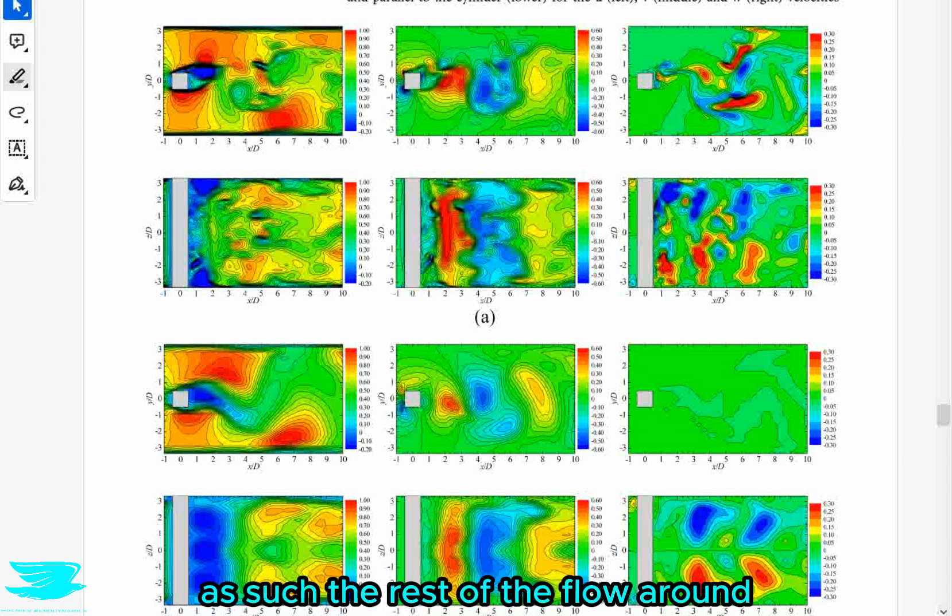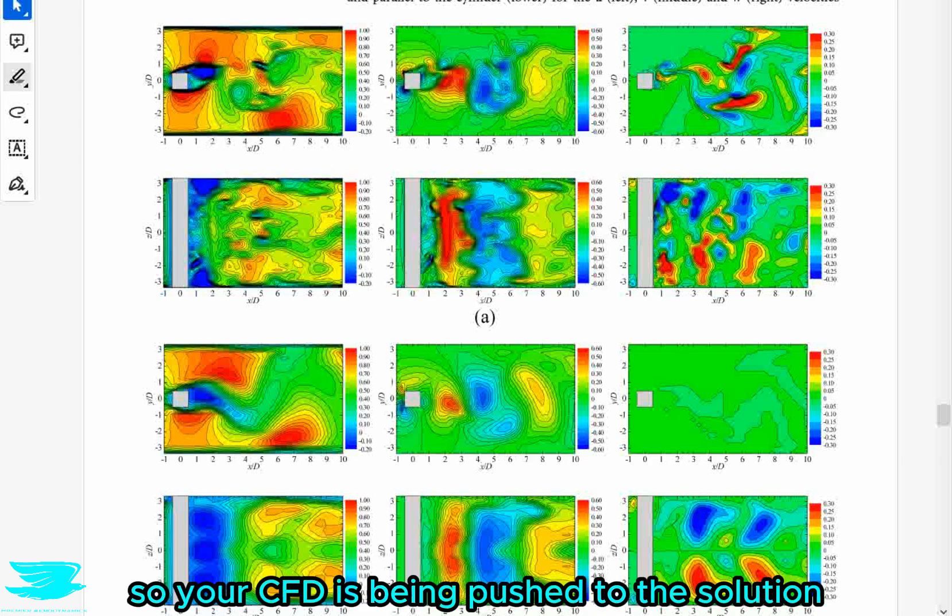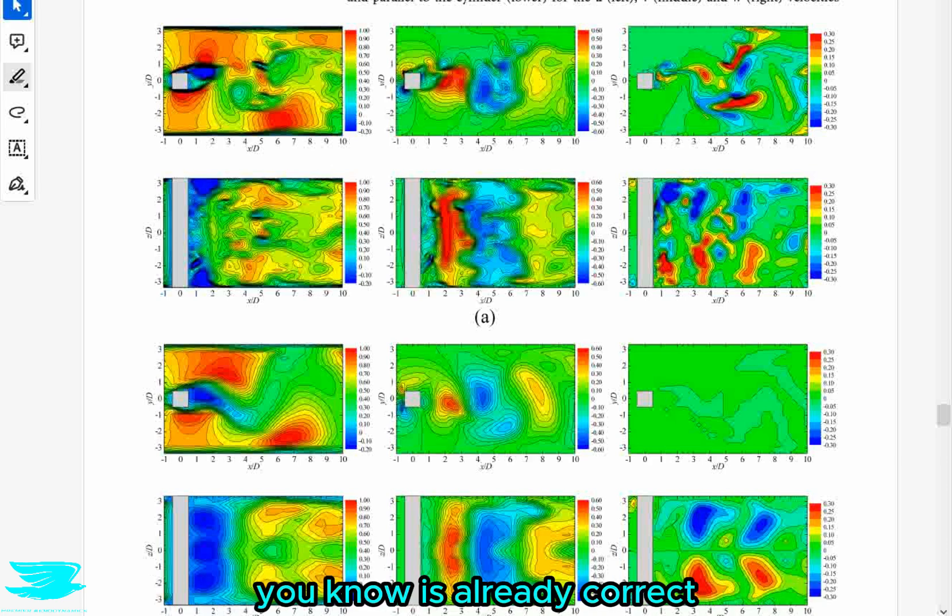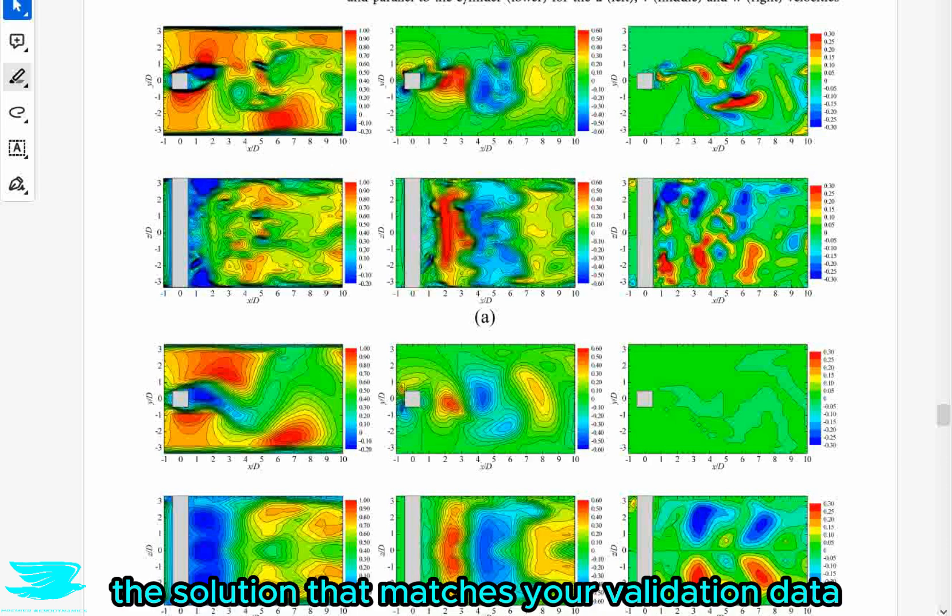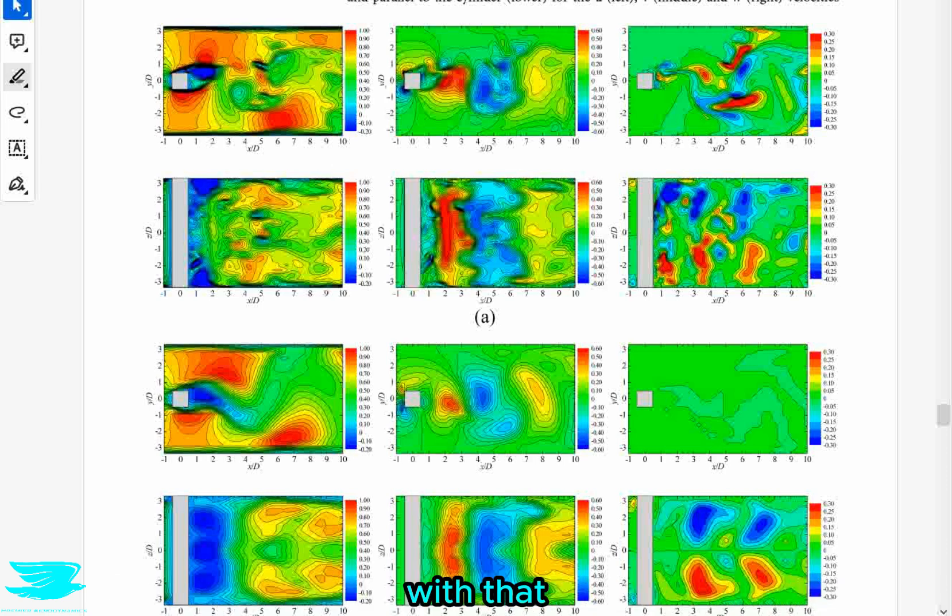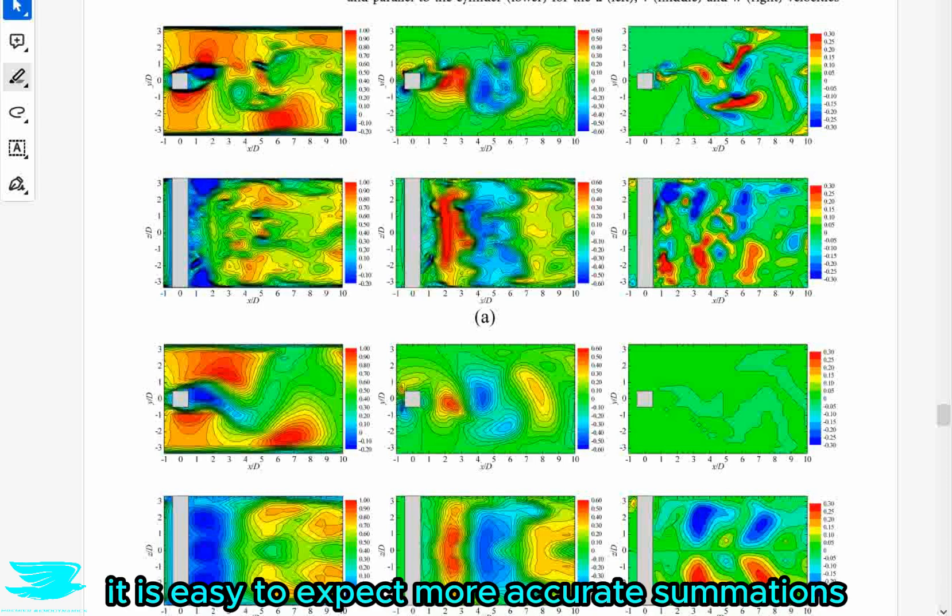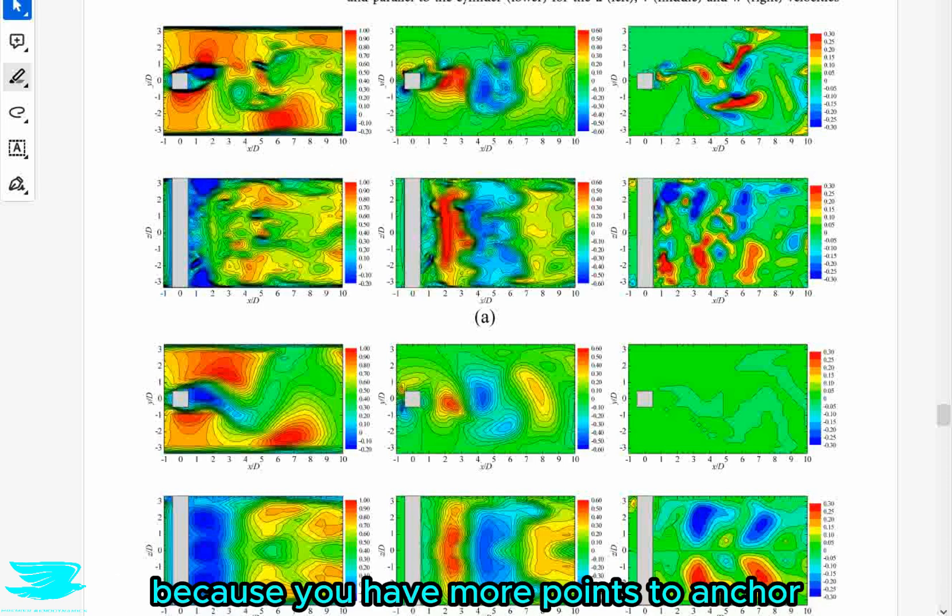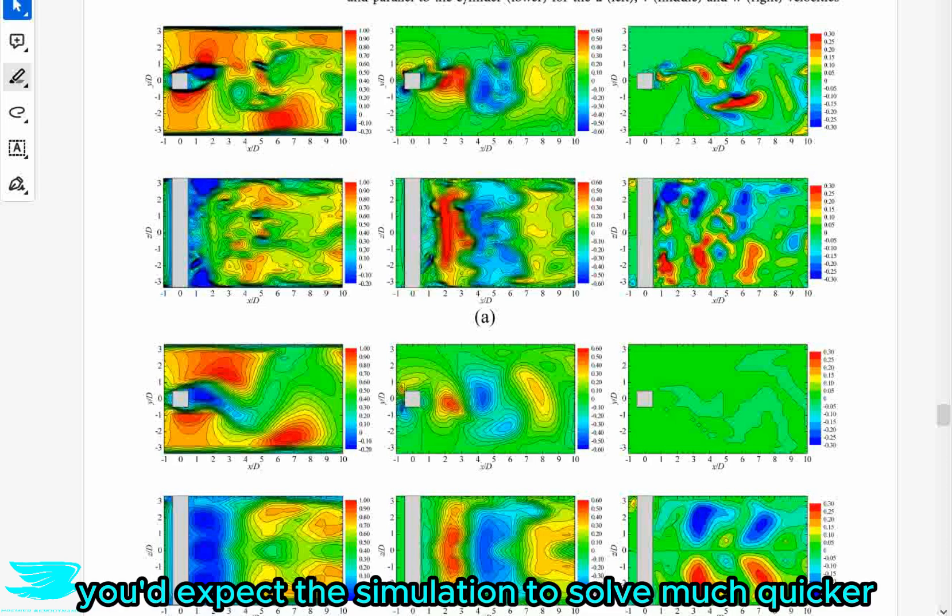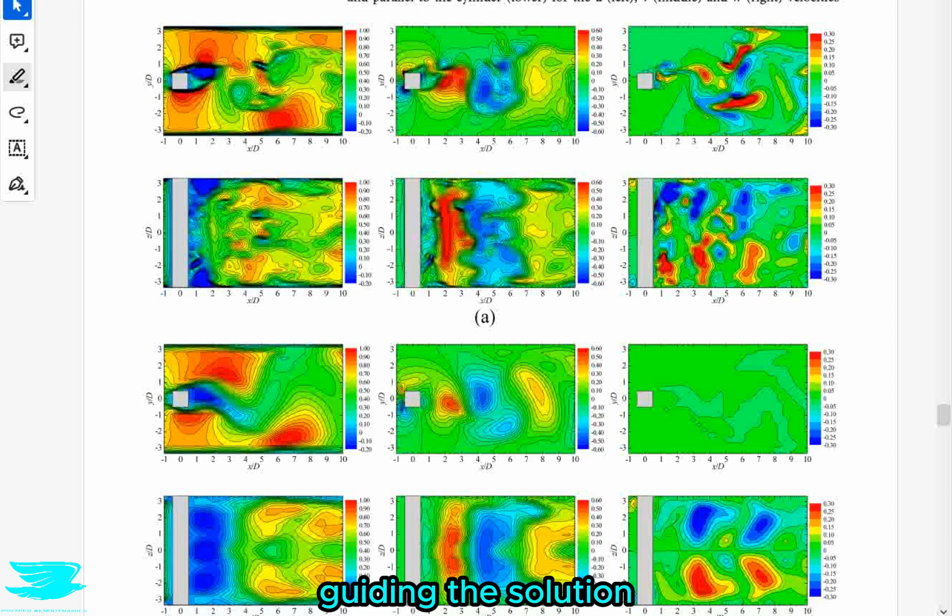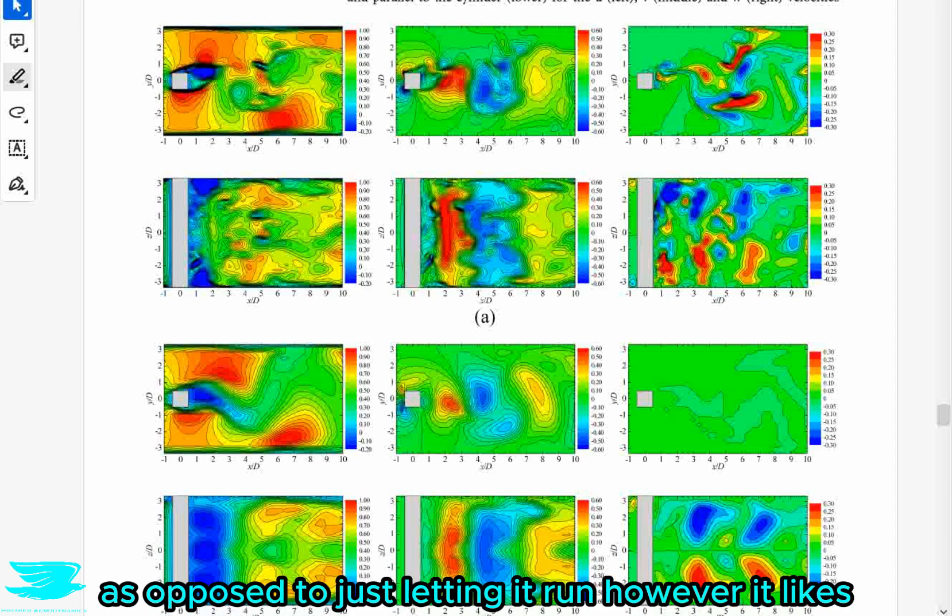You then use your experimental data to anchor the values at strategic points about the mesh to force the CFD simulation to converge to meet those requirements. As such, the rest of the flow around that doesn't have any experimental results are anchored to that in an indirect way, because these boundary conditions effectively in the flow will not change. So your CFD is being pushed to the solution you know is already correct.